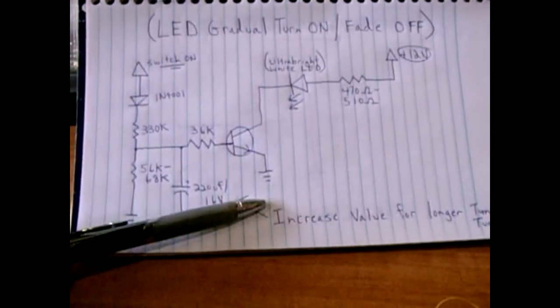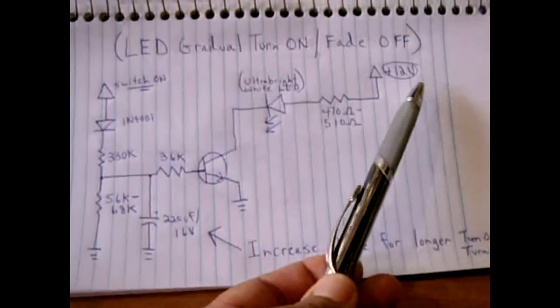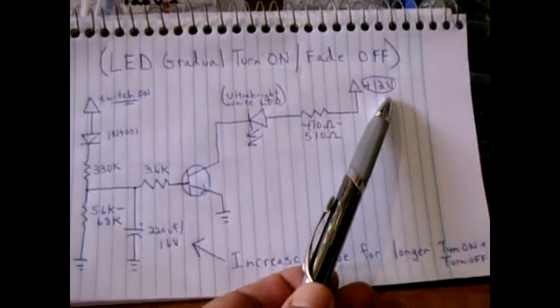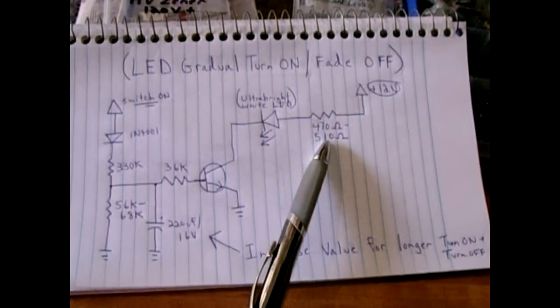The emitter then goes to ground. The power is constantly on with a 12 volt supply or whatever other voltage you're using and that will feed through a current limiting resistor.